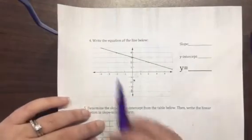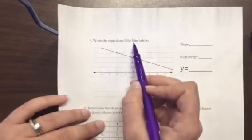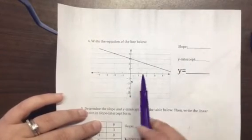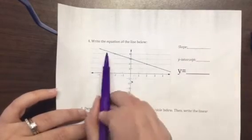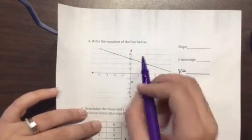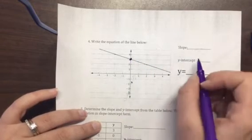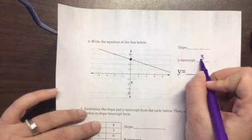Number 4, same thing we just did. So we're writing the equation of the line below. So I'm going to start by finding where does my y-axis meet up with my line of my graph. And I can see that it meets at 3. So my y-intercept is positive 3.